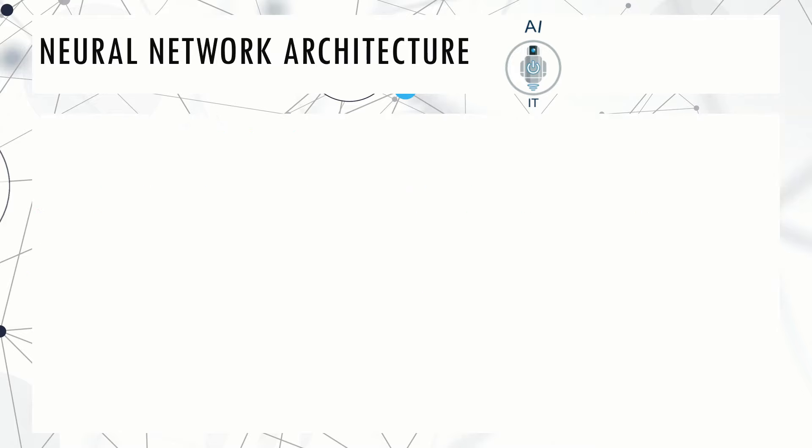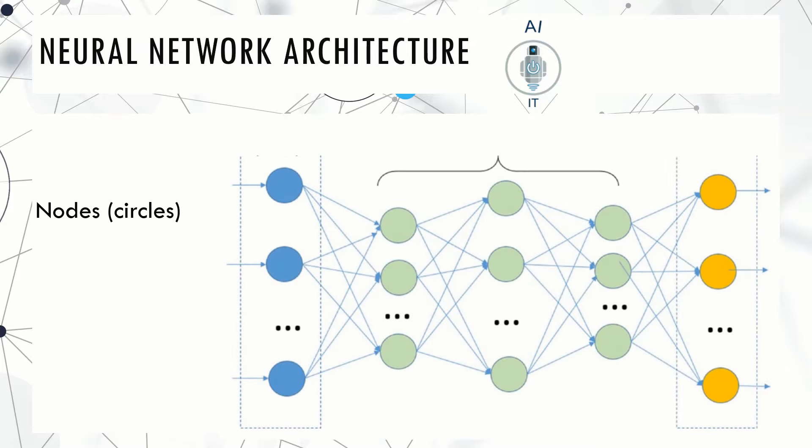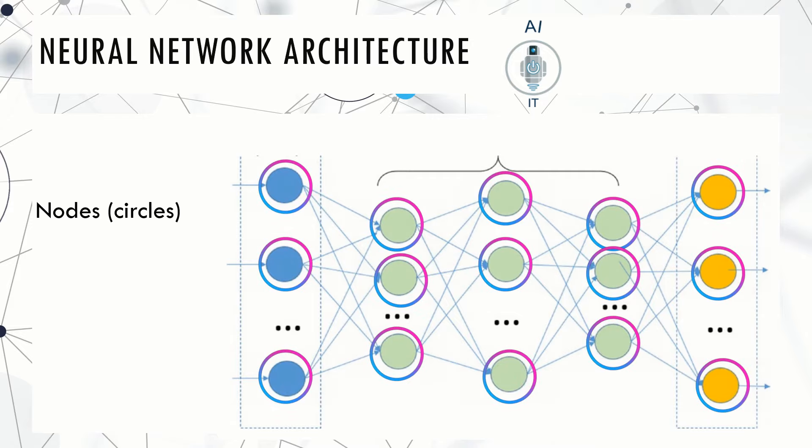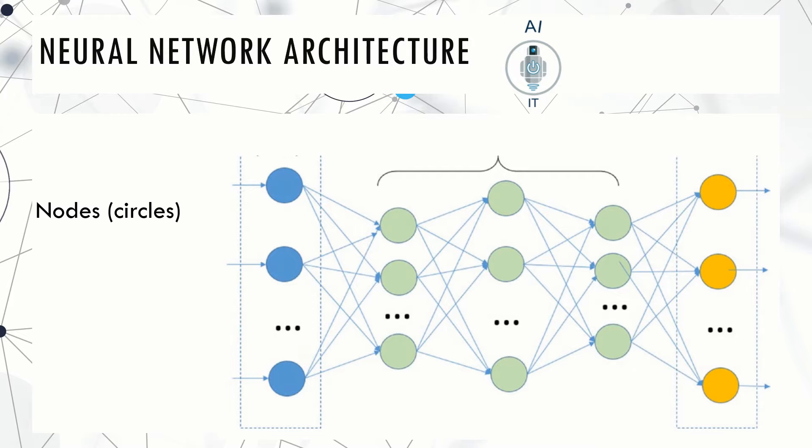Let us understand the structure of neural networks. The basic units are called nodes. These are represented by circles, and they simulate the functioning of a neuron within a neural network. These nodes can transmit signals between each other by means of connections called edges. Edges are lines with arrows between nodes.